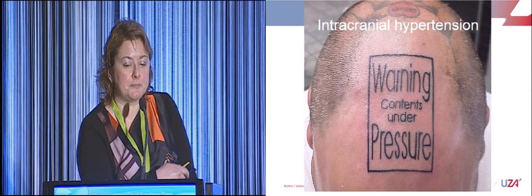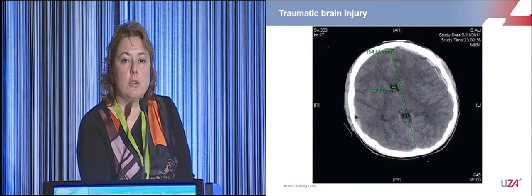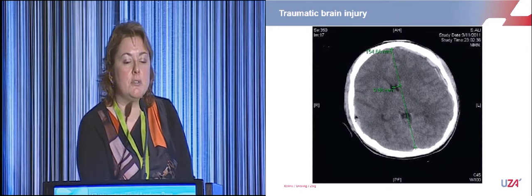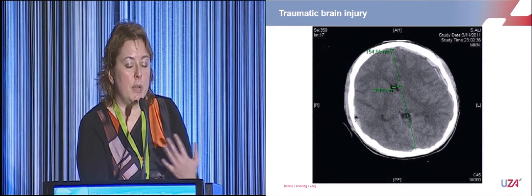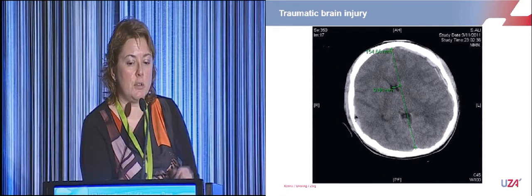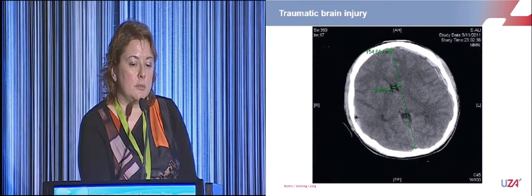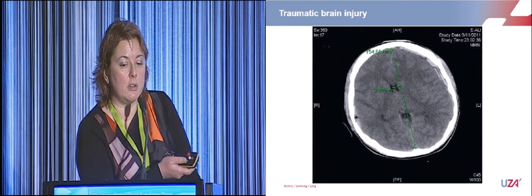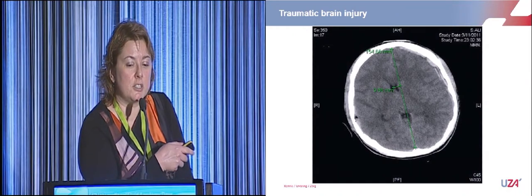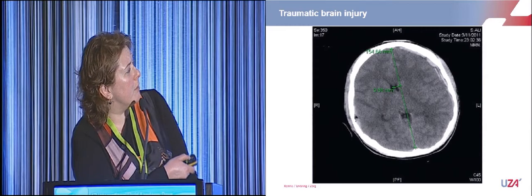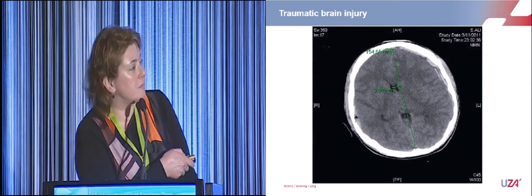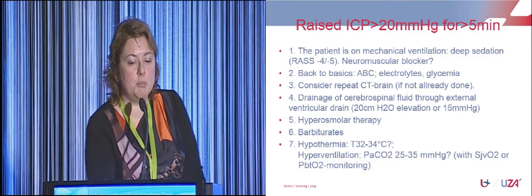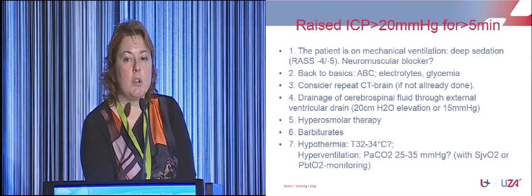Now about intracranial hypertension. I'm not going to discuss all causes or when to start measuring ICP — I'm going to talk about the patient who already has diagnosed intracranial hypertension and what to do about it. This is a patient who had a traumatic brain injury as a bicyclist hit by a car. He had a subdural hematoma with midline shift, underwent surgery, came to the ICU, and had a raised ICP above 20 mmHg for more than five minutes. For this we have a step-up protocol.